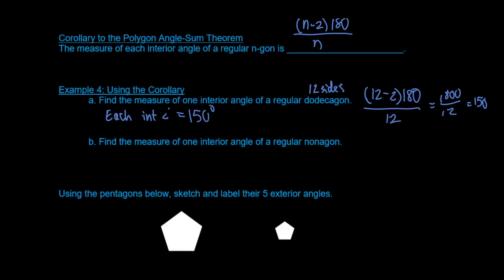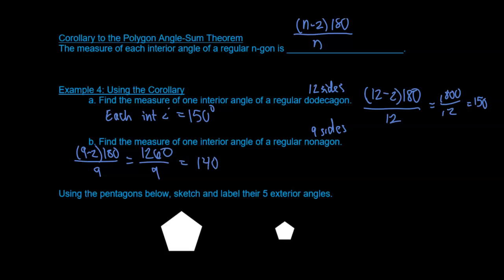A regular nonagon has 9 sides. So this is (9 minus 2) times 180 divided by 9. That is 7 times 180, which is 1,260, divided by 9, and we have 140 degrees for each interior angle.